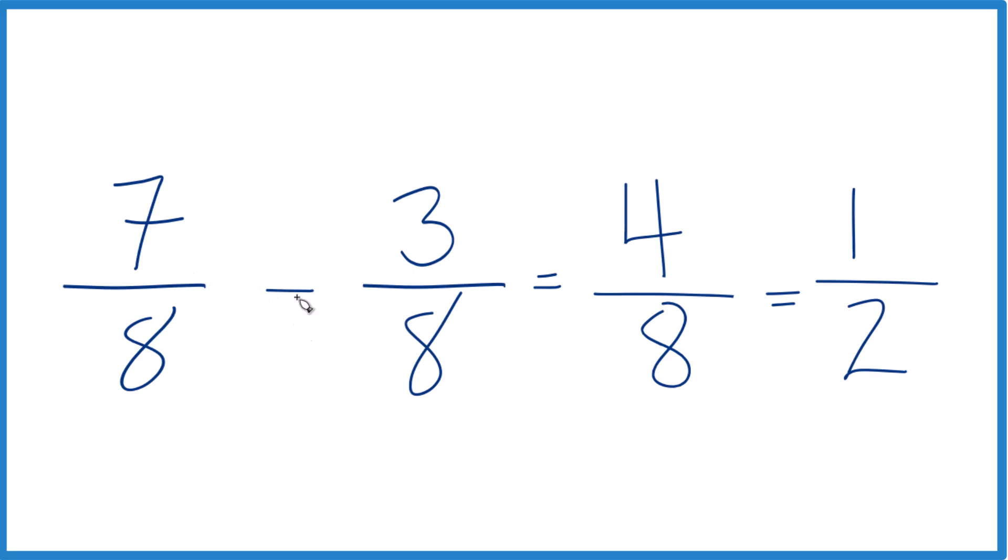So 7 8ths minus 3 8ths, it does equal 4 8ths, and we can simplify that down to 1 half. And that's it. That's how you take 7 8ths minus 3 8ths. The answer is 1 half or 4 8ths. This is Dr. B. Thanks for watchin'.